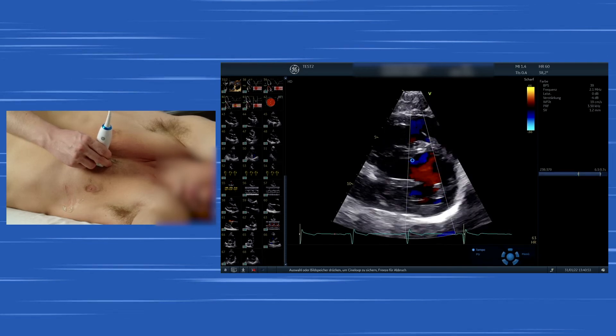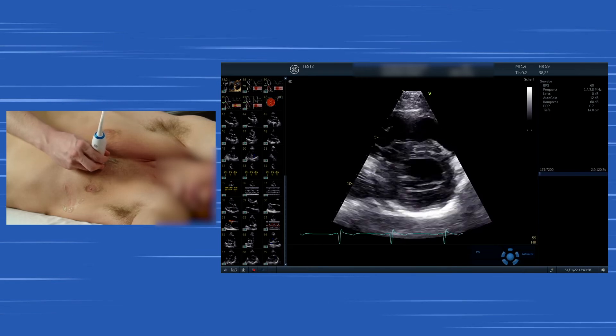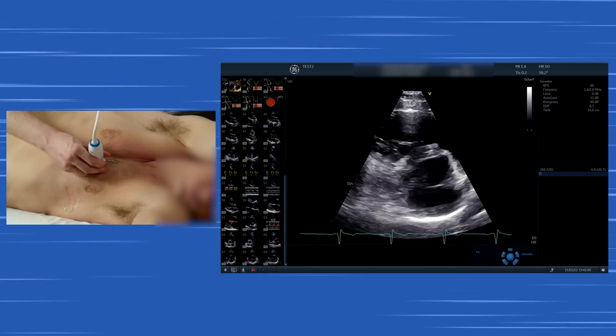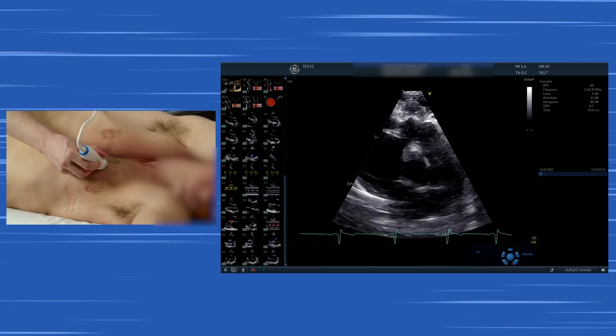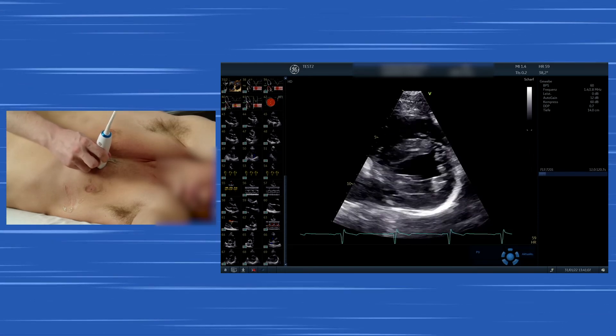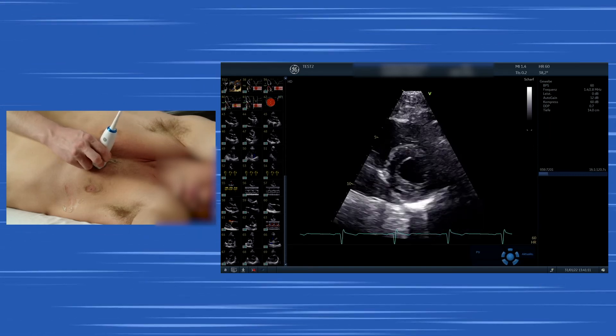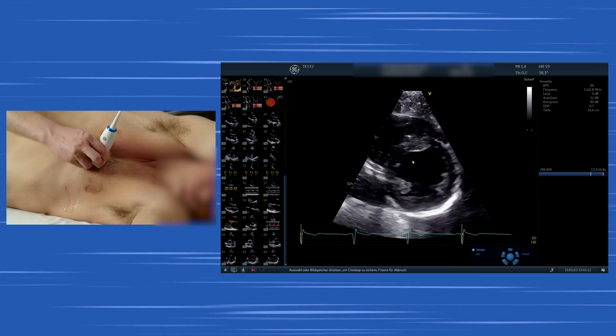If you tilt the transducer more downwards, you see the radial function of the left ventricle. So you basically can evaluate the basal segments until the apical segments of the left ventricle in this one view and evaluate radial function. You also see the two papillary muscles and here we are already almost at the apex.